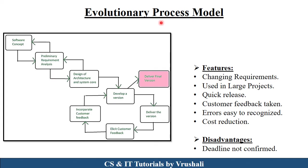The next model is the evolutionary process model. The concept of evolutionary process model follows the software development lifecycle. First they collect requirement from the customer and analyze those requirements. Then they design the particular product as per the requirement. As per the priority of the customer, they develop the first module — that is the first version — then deliver to the customer. If the customer wants any changes, they solve those issues and again deploy it to the customer. After that, they develop the second module and deliver it to the customer. If the customer wants any changes, they solve those changes and again deliver the final version. In the evolutionary process model, there are continuously changing requirements, whereas in the previous incremental model there are fixed requirements — this is the key difference between evolutionary and incremental model.